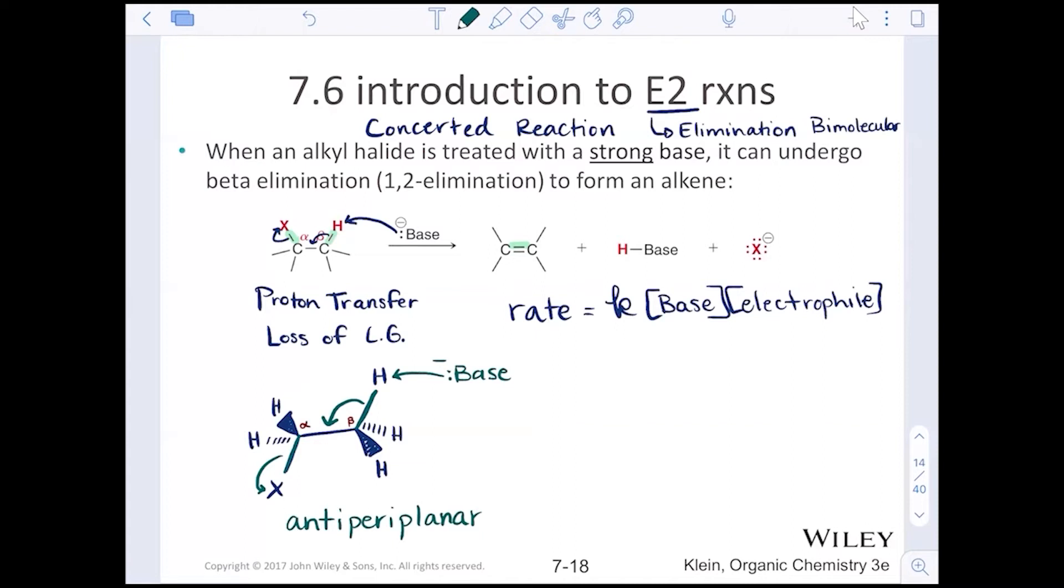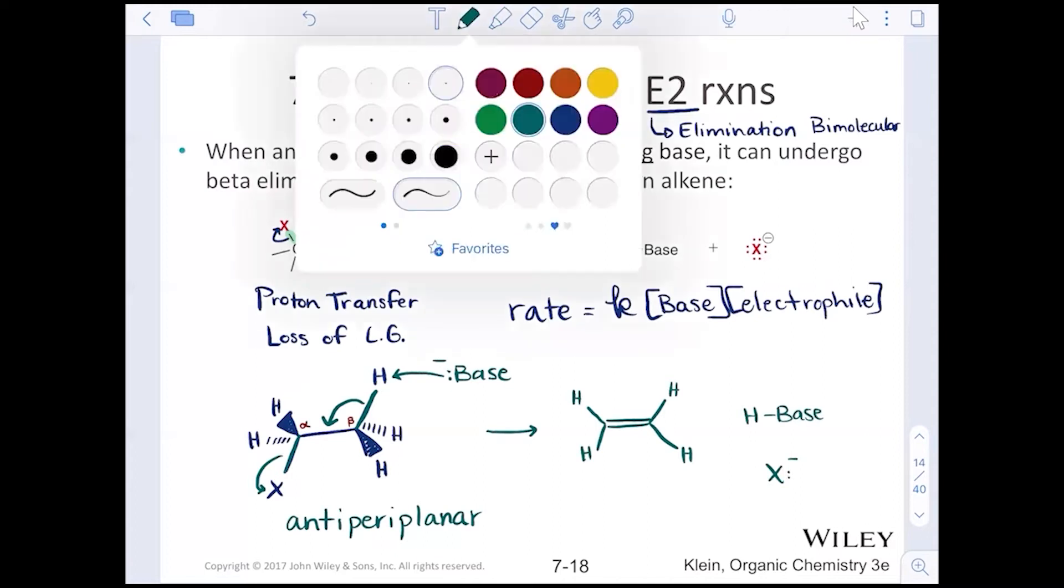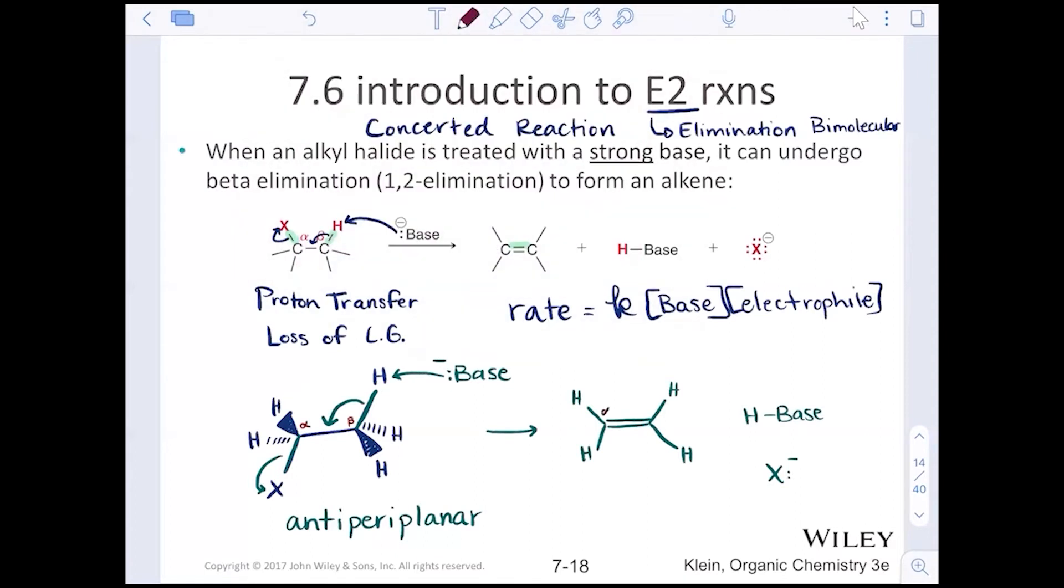They need to be within that same plane directly on top of each other. And that is the only way that we can get that carbon-carbon double bond to form successfully. We protonate the base, so we get a conjugate acid, and we get our leaving group. Let's just label alpha and beta one more time so that we can see that double bond exists between alpha and beta. So a very specific orientation here.